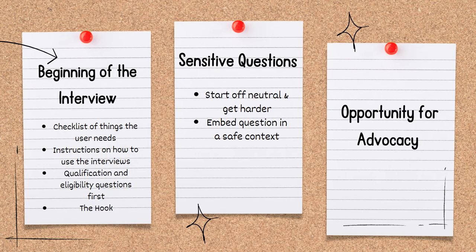Here are some tips for when you're thinking about the order in which you place your questions. At the beginning of the interview, you should have a checklist of everything the user will need to complete the interview and instructions on how to use it. If there are any eligibility or qualifications, you should get those out of the way quickly. You don't want someone to spend 30 minutes answering personal questions and providing details just to find out that they're in the wrong county or don't meet your organization's eligibility guidelines. If you're going to kick someone out of the process, do it early on. Finally, for the beginning of the interview, provide a hook — give the user a reason why they should continue with this automated process.